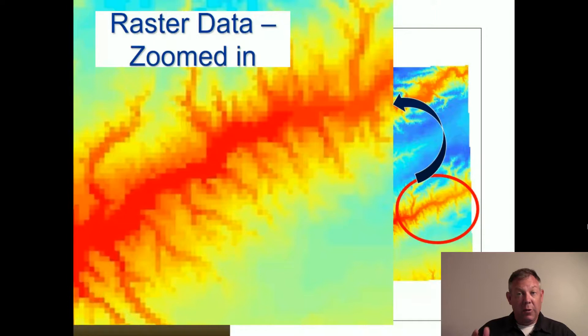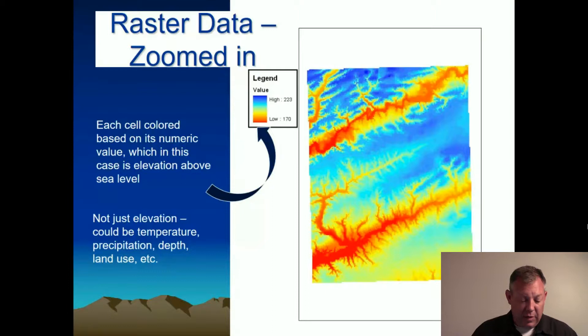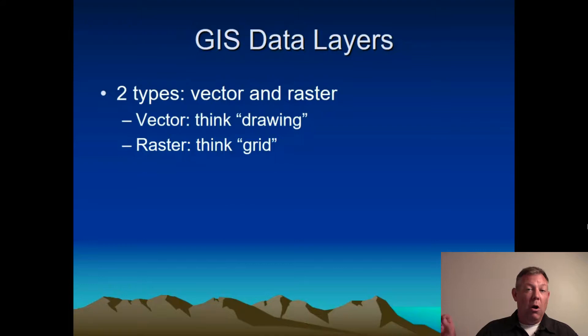So that is raster data — a smooth surface — and the other type of data that has a distinct shape is called vector data. The cell color makes the map have some detail. This example is elevation, but it could be temperature, rainfall, depth, or land use — any number of things where you can give a single numeric value to a cell. The smaller the cells, the more detail you have; the bigger the cells, the less detail you have. So to summarize: vector — think drawing; raster — think grid.